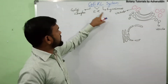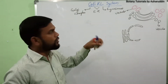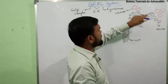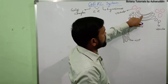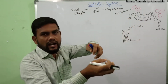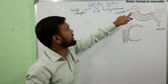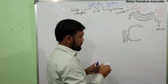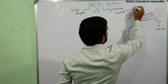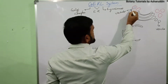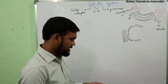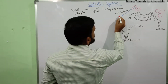Lysosomes are formed by the enlargement of the cisternae of the Golgi bodies. These enlarged vacuoles are concentrated with hydrolytic enzymes. When they contain inactive hydrolytic enzymes, they are called primary lysosomes.